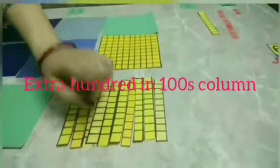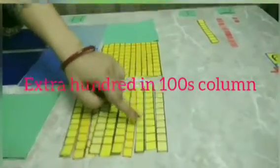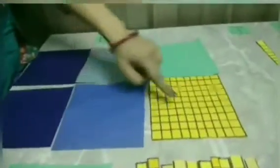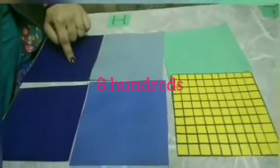So let's count the number of hundreds. 1, 2, 3, 4, 5, 6, 7, 8. So how many hundreds? 800. 800.